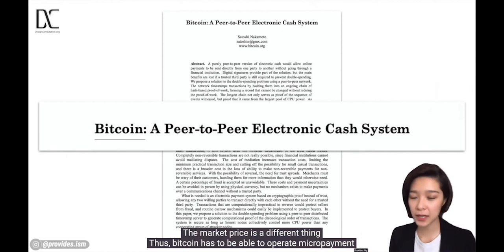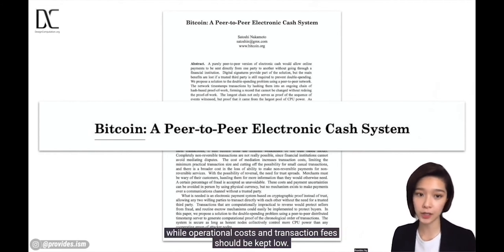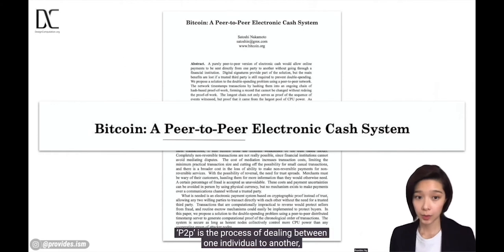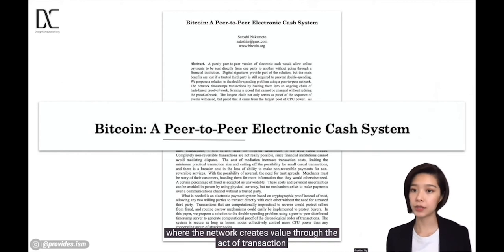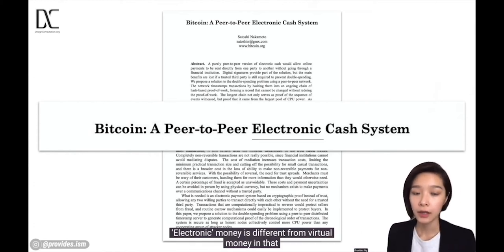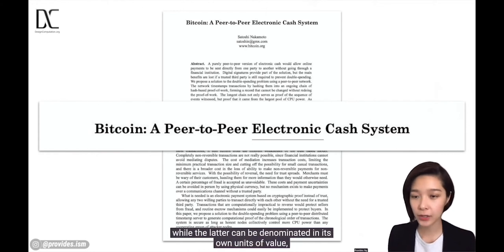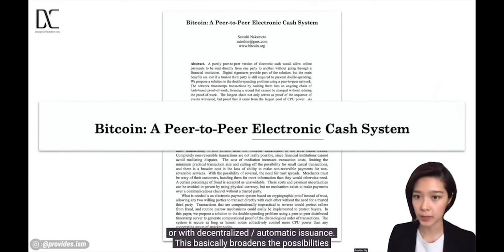Bitcoin is a form of specie money that creates value for its relative utility. The market pricing is a different thing of less concern to this presentation. Thus, Bitcoin has to be able to operate micropayments to account for the smallest value in information exchanges, while operational costs and transaction fees should be kept low. Peer-to-peer is the process of dealing between one individual to another, where the network creates value through the act of transaction from person to person as opposed to person to market. Electronic money is different from virtual money in that the former does not necessarily change the value of fiat currency, while the latter can be denominated in its own units of value or with decentralized automatic issuance.